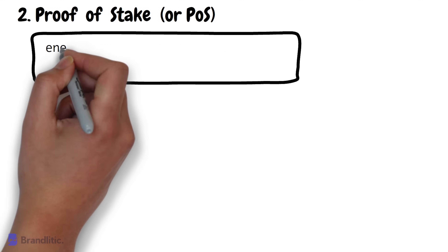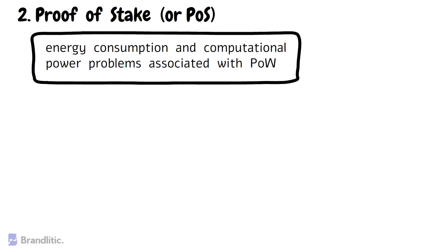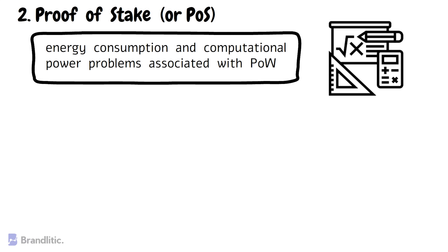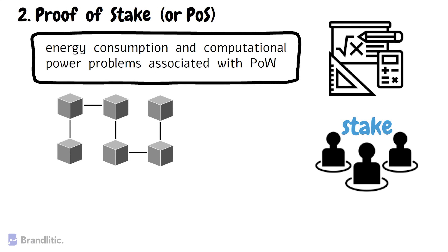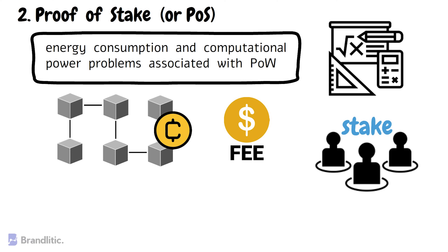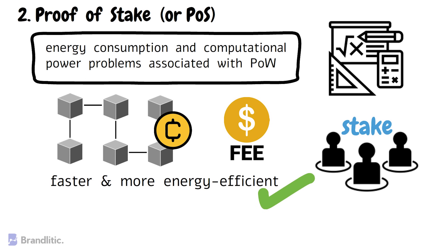Proof of Stake is a consensus algorithm that aims to address the energy consumption and computation power problems associated with Proof of Work. In Proof of Stake, instead of solving complex mathematical problems, network participants are required to stake a certain amount of cryptocurrency in the network. The network then randomly selects a participant to validate the next block of transactions based on their staked amount, and this participant is rewarded with a transaction fee. This is what makes Proof of Stake a faster and more energy-efficient consensus protocol than Proof of Work.